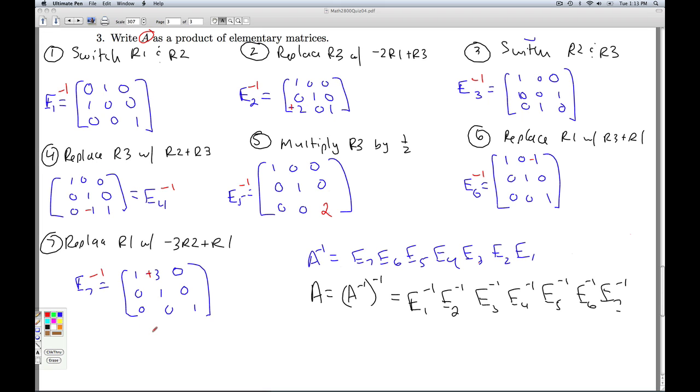So inverting an elementary matrix really amounts to just thinking through what the opposite row operation would be to get you back to the original matrix. And so once again, it's a good exercise to start with these, multiply them all the way back out, and see that you get our matrix A. That'll do it for number 3, and that'll do it for quiz 4.